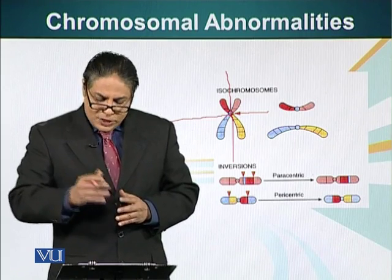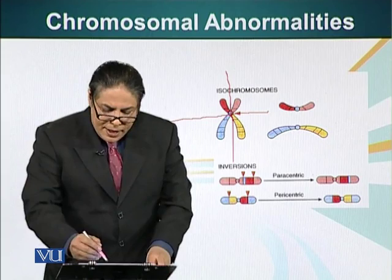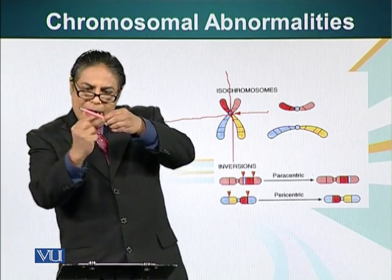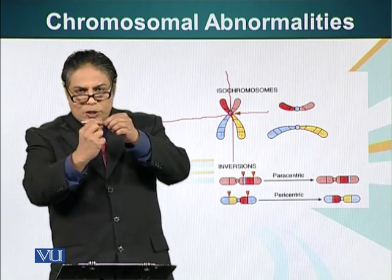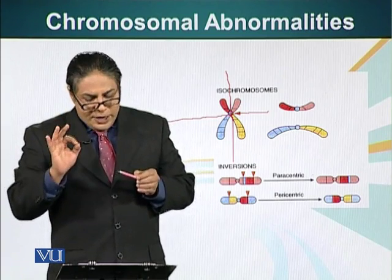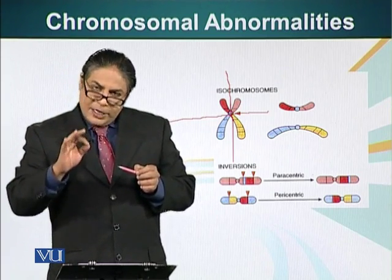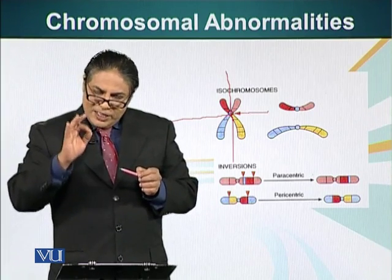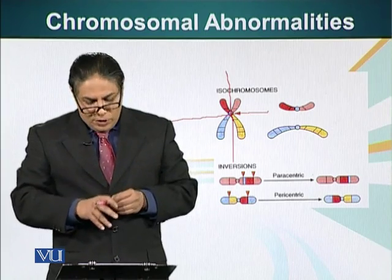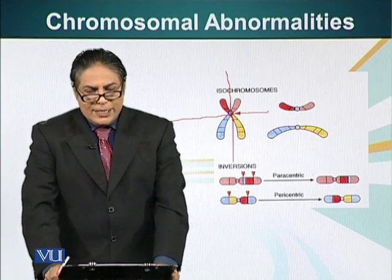There are also inversions. A piece of a chromosome breaks and inverts 180 degrees before fusing back with the chromosome. If the inversion involves the centromere region, it is called a pericentric inversion. If it does not involve the centromere region, it is called a paracentric inversion. We will continue our discussion of cytogenetics in the next module.